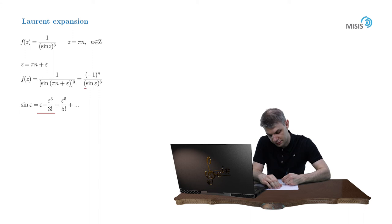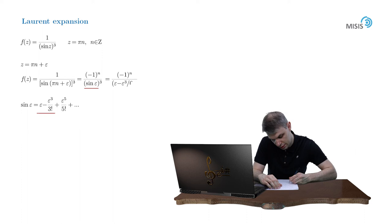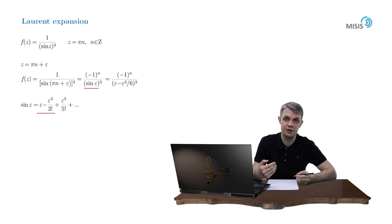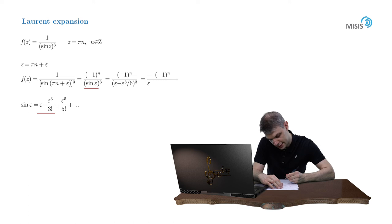So what we obtain is as follows. Negative 1 to the power of n over (epsilon minus epsilon cubed over 6) cubed. And the way we proceed further, we always factor out the leading term in the braces. Here it's obviously epsilon term. So we factor it out and obtain epsilon cubed times (1 minus epsilon squared over 6) cubed.